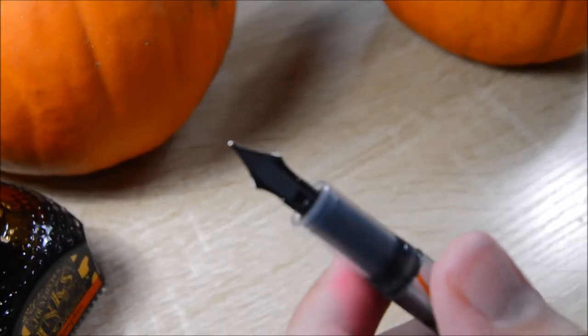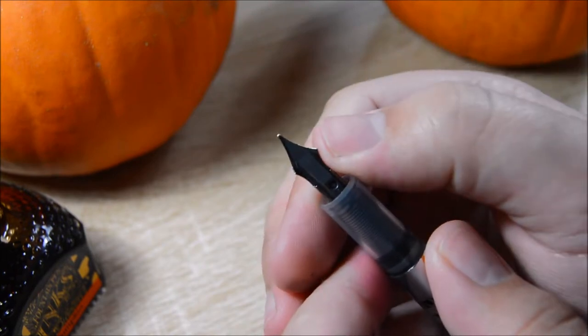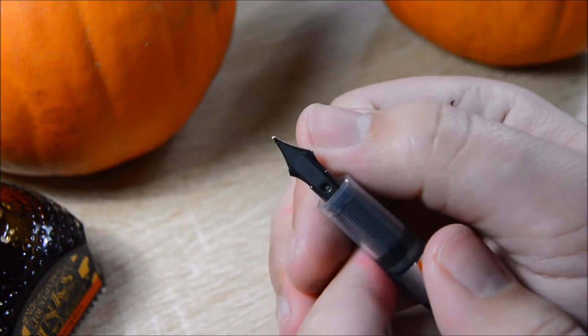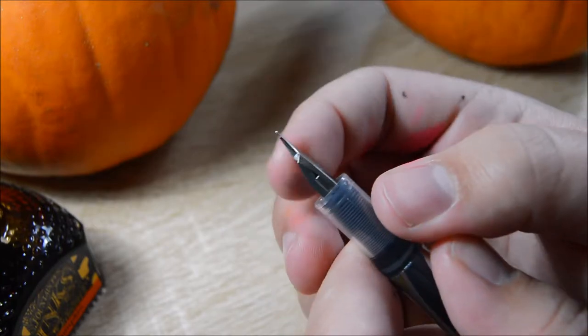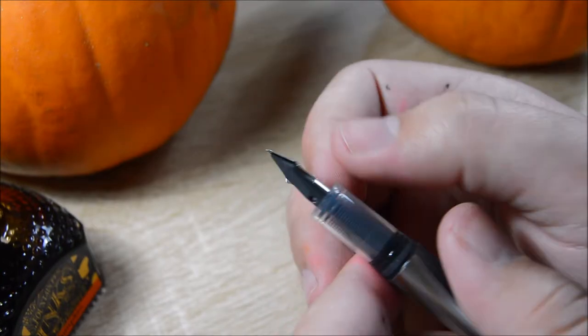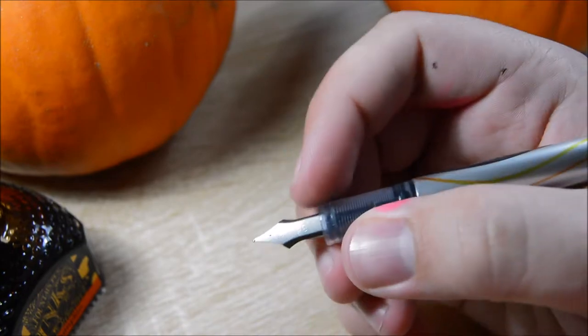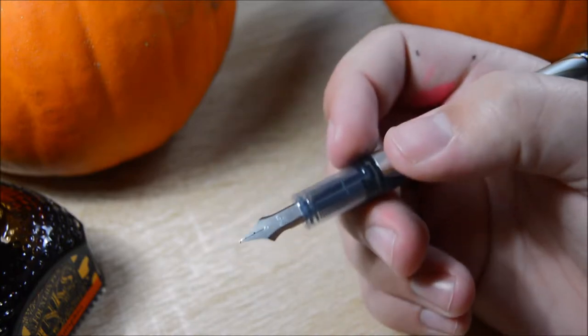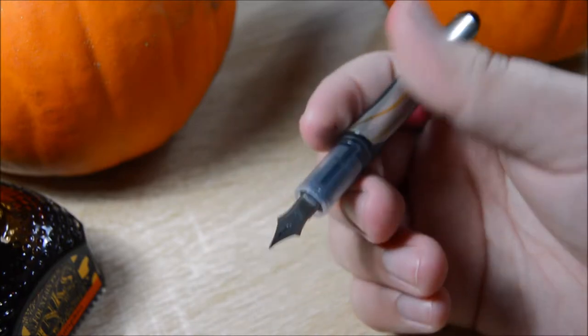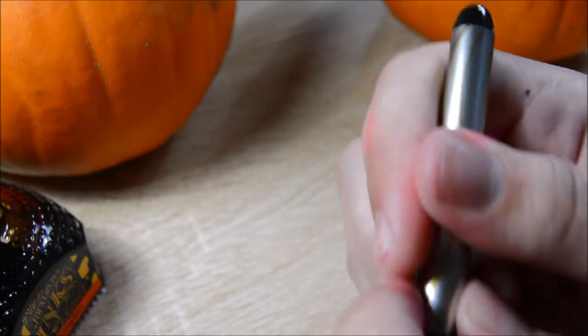Next up is going to be the nib shoulders on this pen. Which is the exact same thing I complained about on the petite one. Because it's the exact same nib. The nib shoulders are sharp. It's not a huge issue. I really doubt you're ever going to hurt yourself with them. Like, it's not like you're going to be writing and have your fingers slip up and slice it open. But it's a really weird design and oversight in general. I wish they had just sanded them off or something. I think there's a lot that could be done with them.